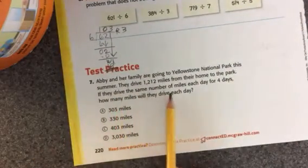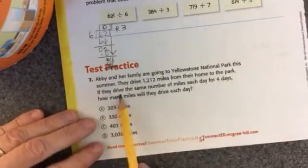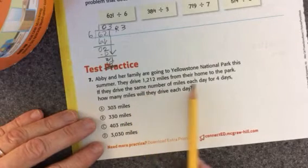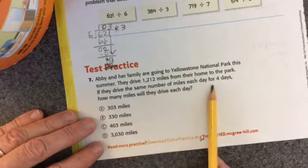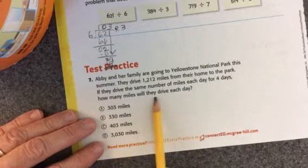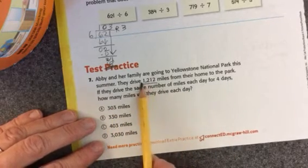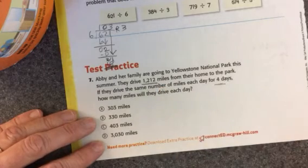All right. Abby and her family are going to Yellowstone National Park this summer. They drive 1,212 miles from their home to the park. If they drive the same number of miles each day for four days, how many miles will they drive each day? Here's our dividend, and here's our divisor. Okay.